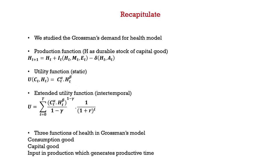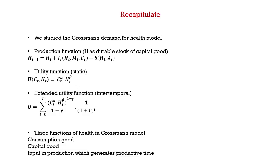We also discussed three functions of health in Grossman's model, where Grossman looked at health not just as a consumption good, but also as a capital good and as an input in the production process which generates productive time. In this lesson, we will discuss a few more aspects on demand for health.